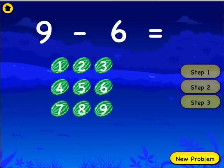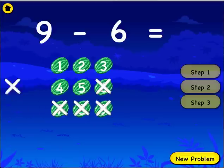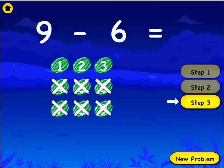Remove six watermelons. One, two, three, four, five, six. How many watermelons do you have now? One, two, three. Nine minus six equals three.